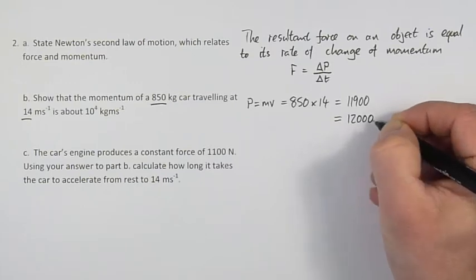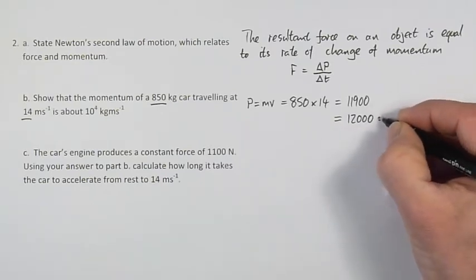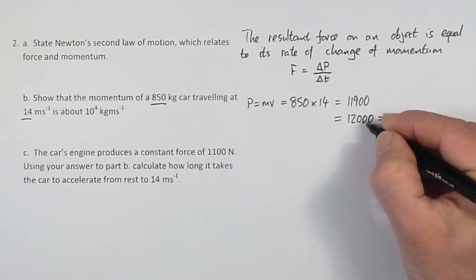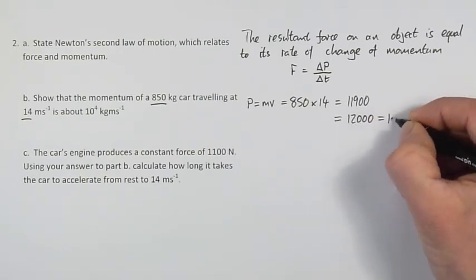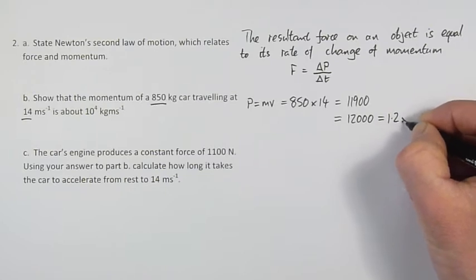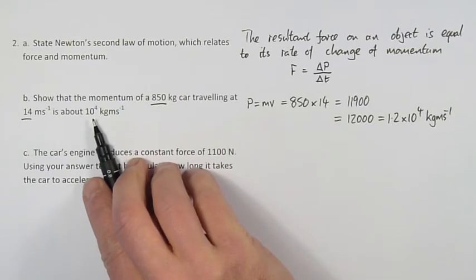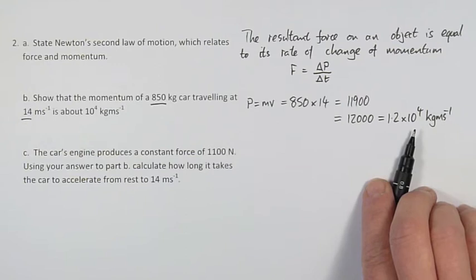So that is 12000, and now we will change that into standard form. We will count back from here: 1, 2, 3, 4 places for the decimal point. 1.2 times 10 to the power of 4 kilograms metres per second. And if we compare that to the original number given, we can see that it is about the same number.